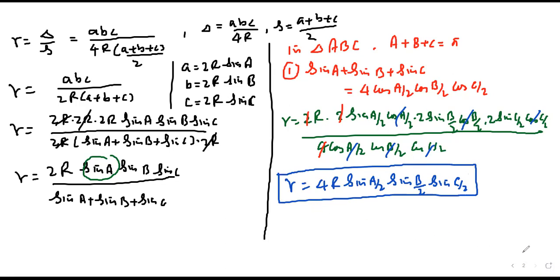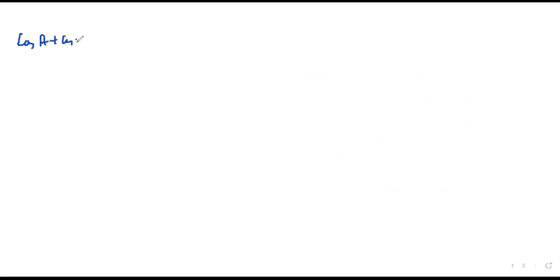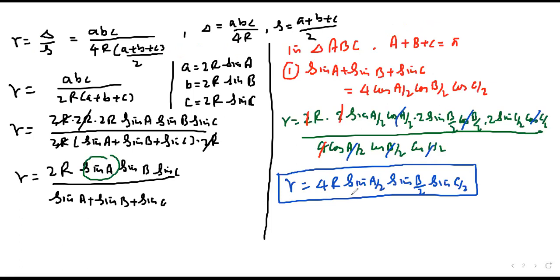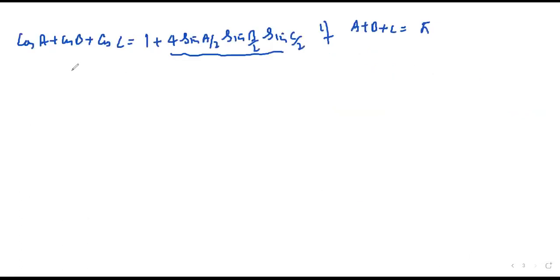Now let us see the second part. We need to prove that cos A + cos B + cos C equals 1 + r/R. Using the result for sin(A/2)·sin(B/2)·sin(C/2) from part one, and the condition that A + B + C = π, we can show cos A + cos B + cos C = 1 + r/R.